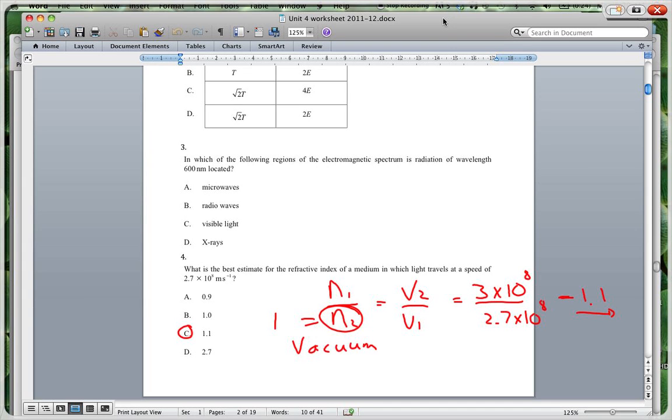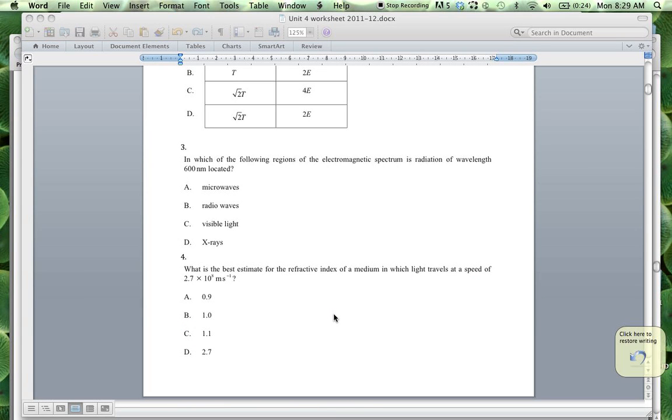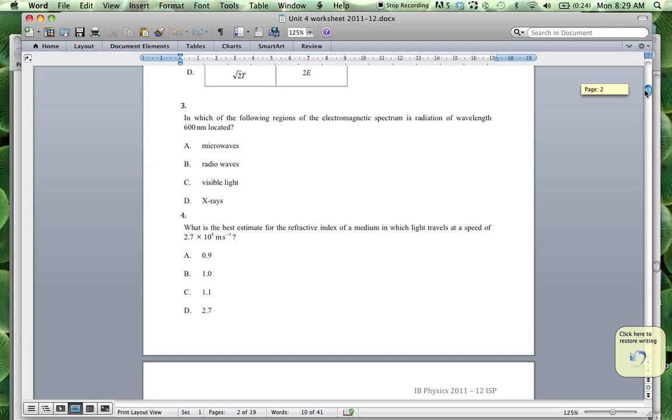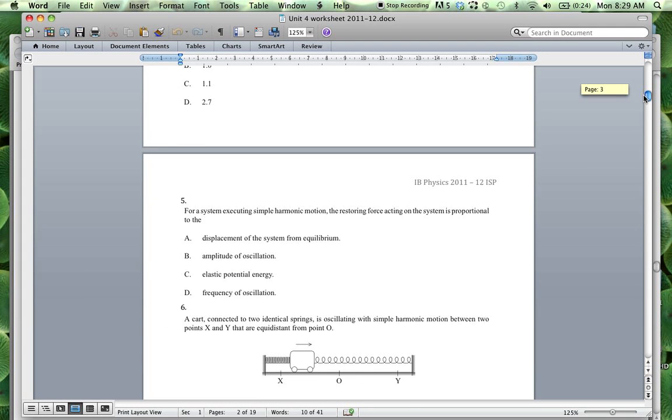This turns out to be 1.1. So just making sure that these correspond. If we choose N1 to be for the vacuum, then we know that that will be the speed of light in a vacuum. So it's pretty straightforward, just making sure that you keep in control of putting the same thing, the corresponding things together. Good, going on to question 4, sorry, question 5.